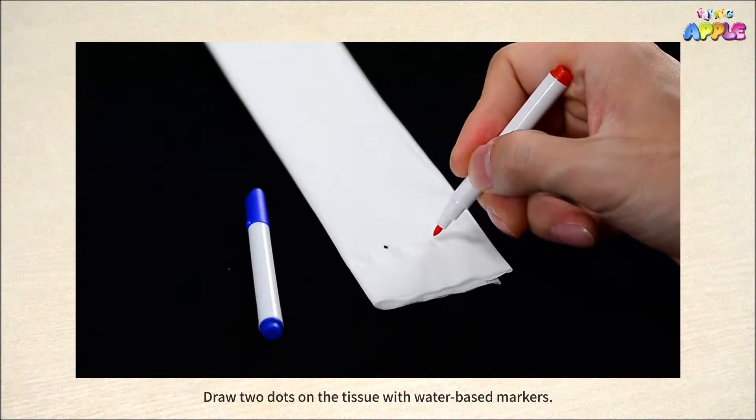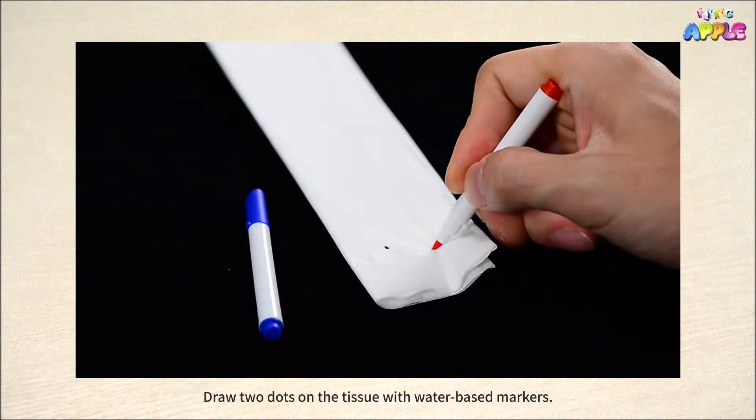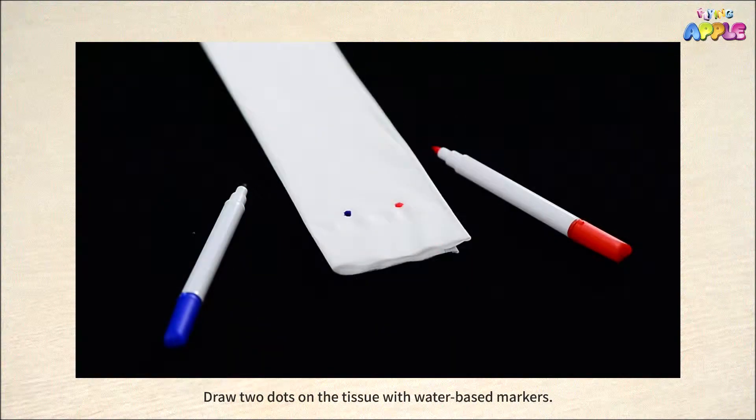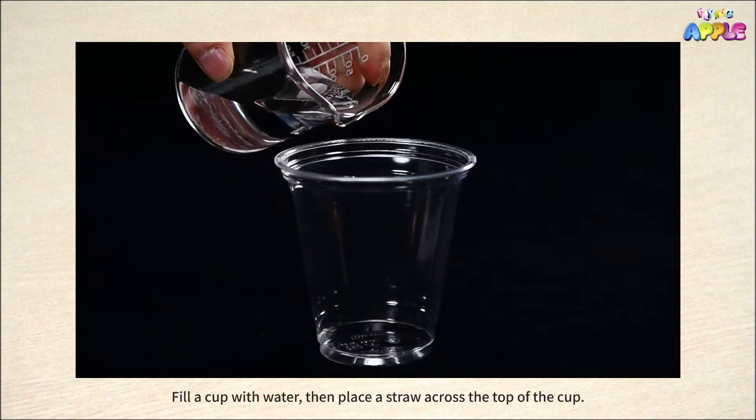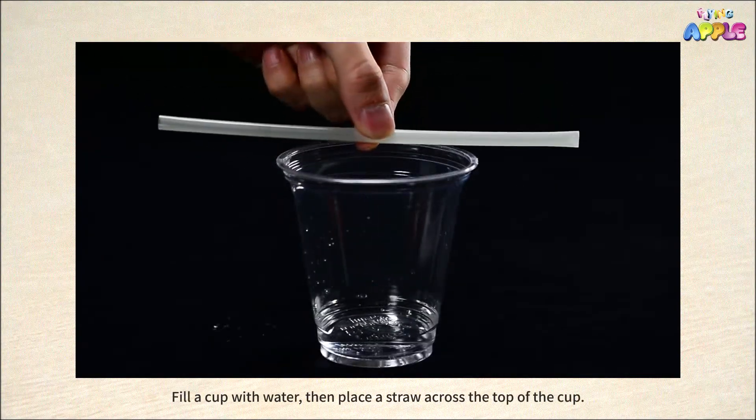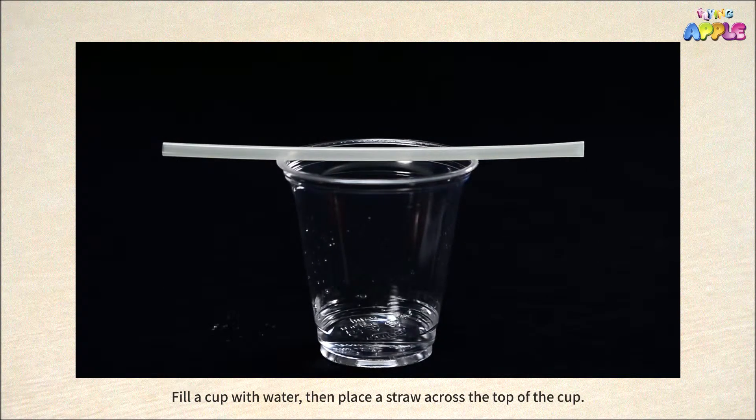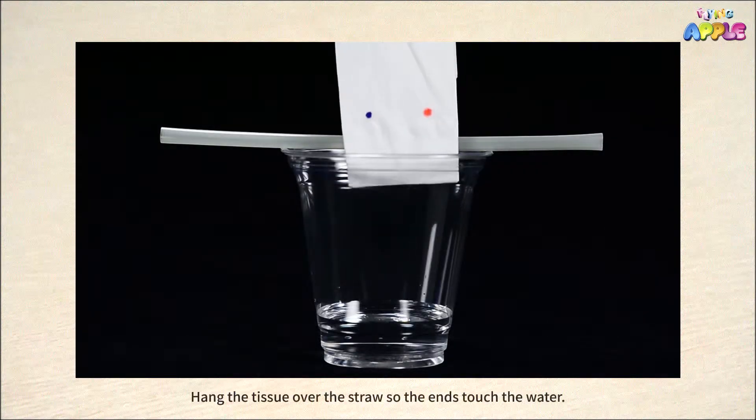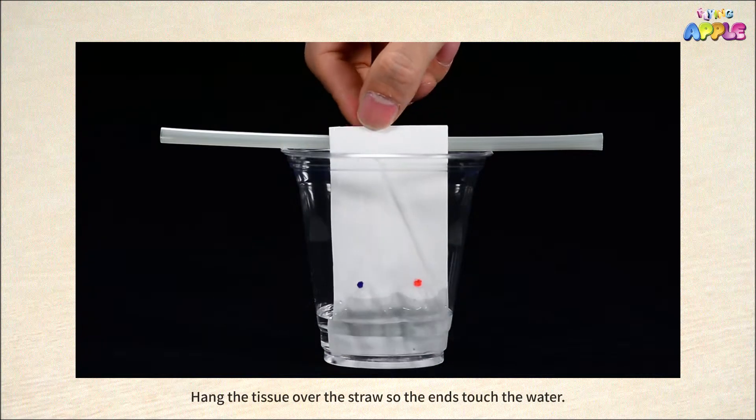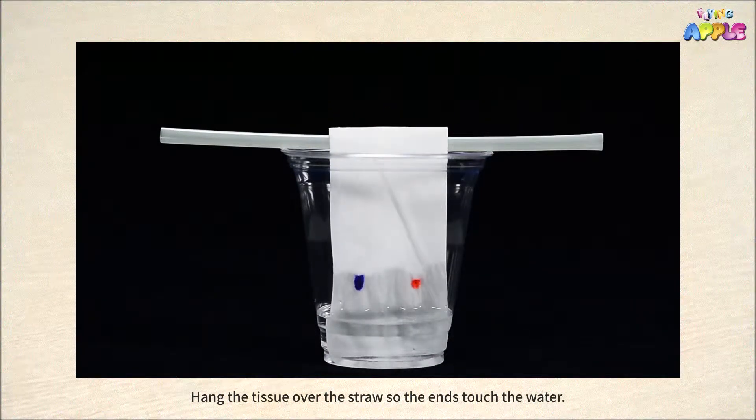Draw two dots on the tissue with water-based markers. Fill a cup with water, then place a straw across the top of the cup. Hang the tissue over the straw so that the ends touch the water.